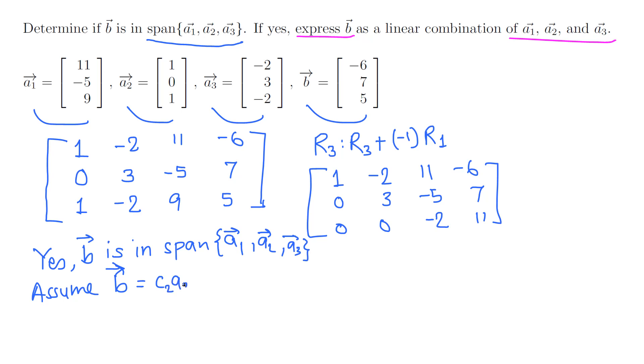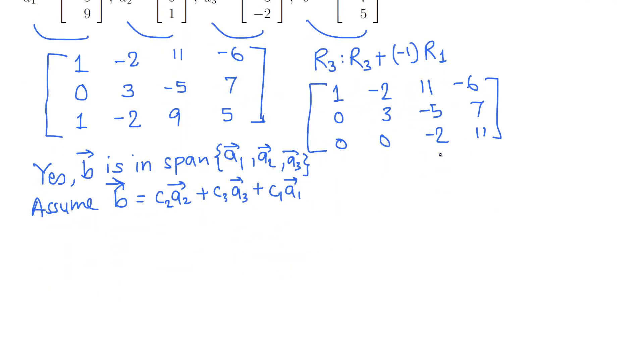Write down c2*a2, then that's a3 with c3*a3 plus c1*a1. From the first we are getting c2, from the second we are getting c3, and from the last we are getting c1. This one from the last we are getting c1, this is c3, and from the first we are getting c2.